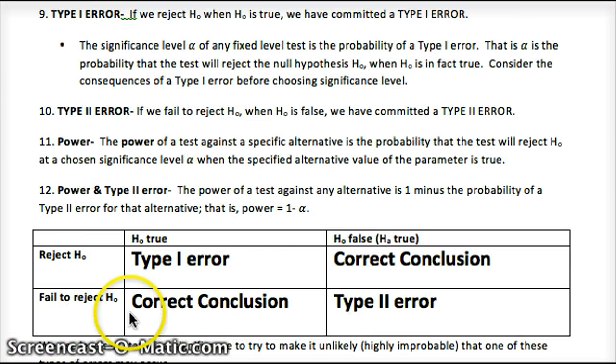Remind yourself what type 1 and type 2 is. Now, here's our little chart about what type 1 and type 2 is. So this column represents if the null hypothesis is true. This represents if it's false. This row represents rejecting our null hypothesis. This represents failing to reject.